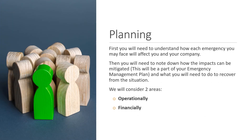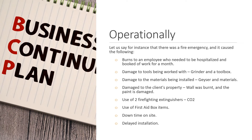First, you will need to understand how each emergency you may face will affect you and your company. Then you will need to note down how the impacts can be mitigated. This should always be a part of your emergency management plan, as well as what will be needed in order to recover from the situation. For instance, let us say there was a fire emergency and it caused the following: burns to an employee who needed to be hospitalized and booked off for a month; damage to tools such as a grinder and a toolbox; damage to materials being installed such as the geyser; damage to the client's property — a wall was burned and the paint damaged; the use of two CO2 fire extinguishers; use of certain first aid box items; downtime on site; as well as a delayed installation.